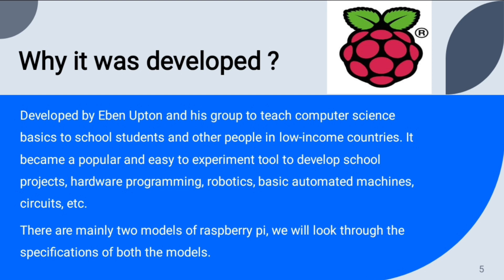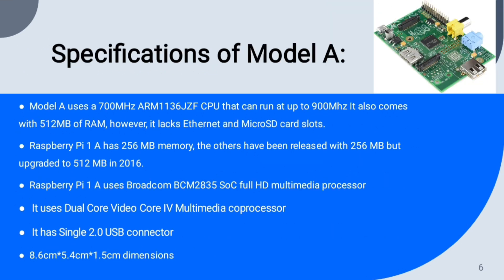It was used for hardware programming, robotics, basic automated circuits, etc. There are two models of the Raspberry Pi. Model A uses a 700 MHz processor that can run up to 900 MHz. It came with 256 MB of RAM; however, it lacks internet connectivity and a micro SD card slot. The operating system used by Model A is Linux.